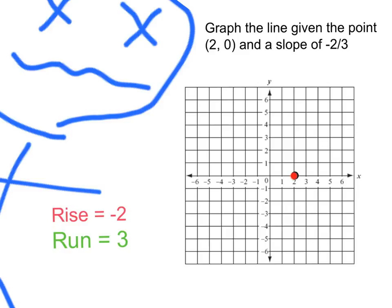My rise is negative 2. That's going to be down 2, negative 1, negative 2. And my run is 3. That's going to be 1, 2, 3. And at that spot right there, I know I have another point. From there, we've got two points on the line. That's all we need. Let's go ahead and connect those bad boys. And there, we've got our line.